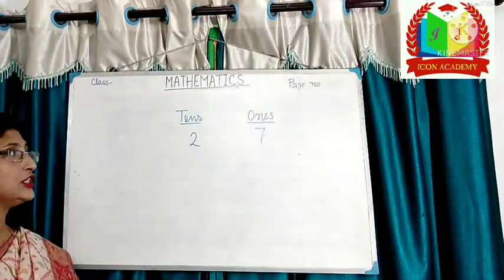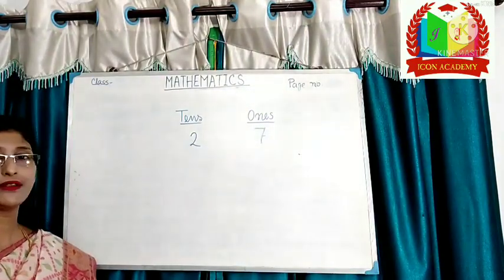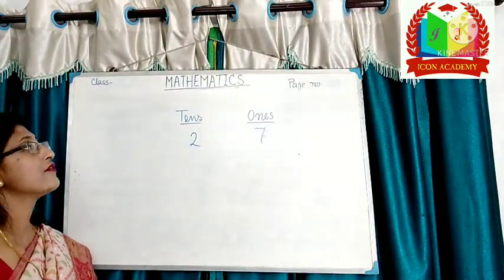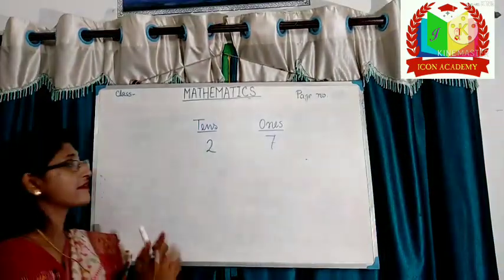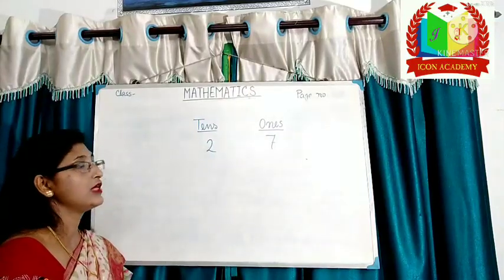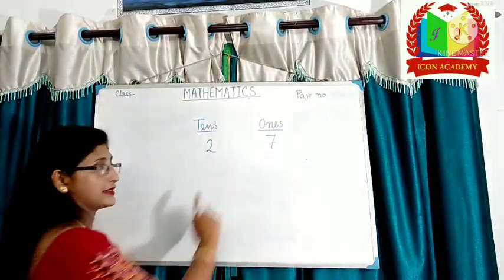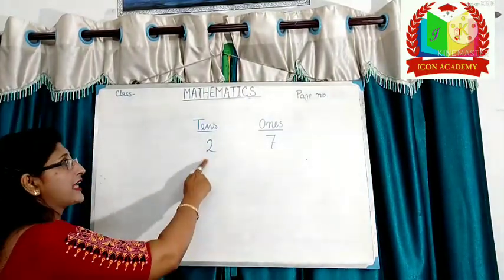Look at the number 27. We will write the digits from right to left. Starting from the right, the first digit will be at ones place. Then tens place.